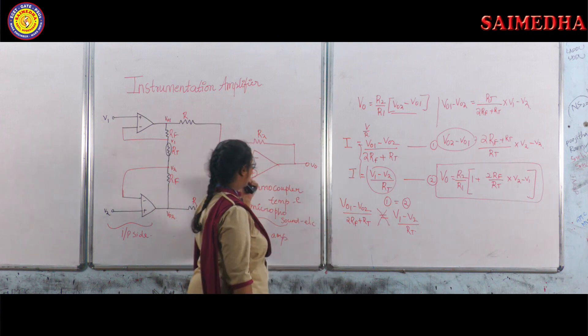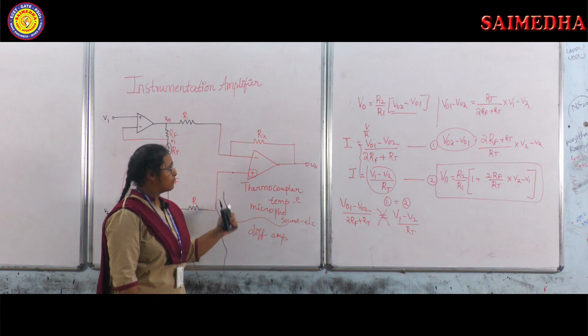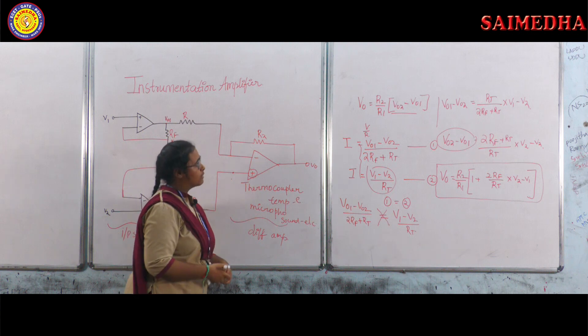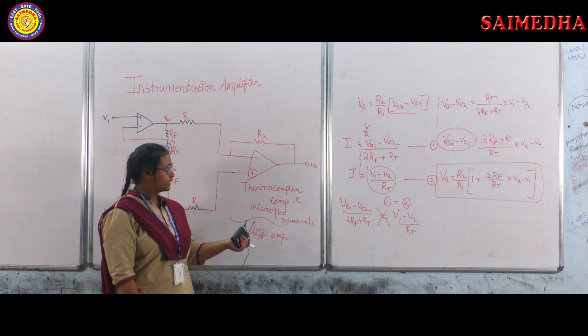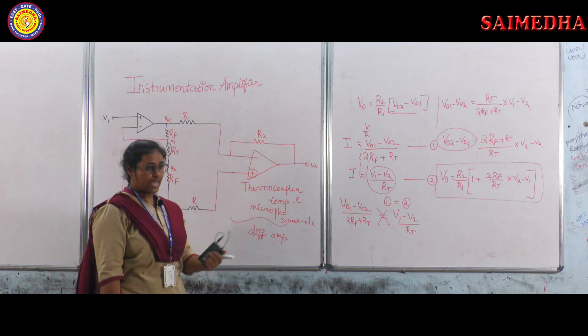The main difference between normal op amp and instrumentation op amp is, in instrumentation op amp only difference stage is preferred. But in normal op amp, we can use both inverting and non-inverting and even difference amplifier. This ends my topic. Thank you.